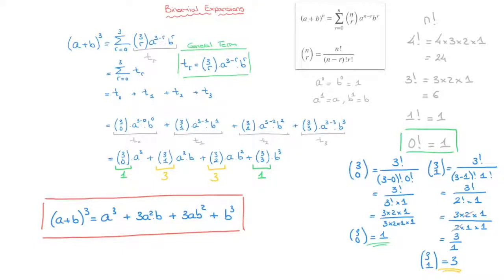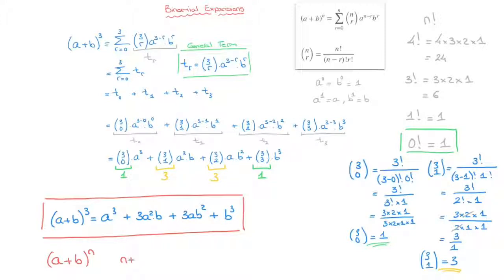It's worth pointing out one more important result. Notice our final answer has 4 terms, but we raised the binomial to the power of 3. The number of terms in the expansion is always one more than the power. In general, if we raise a binomial a plus b to a power n, where n is an integer greater than or equal to 0, it will always have n plus 1 terms. For example, a plus b to the power of 4 has 5 terms, and a plus b to the power of 7 has 8 terms. Make a note of that — it's often asked in exams.